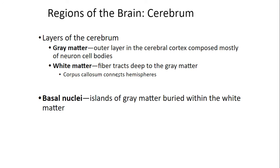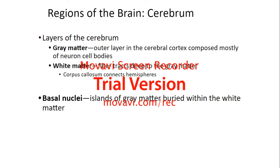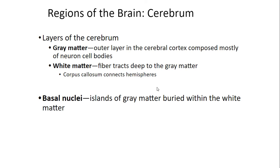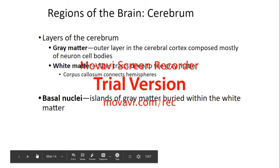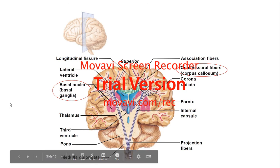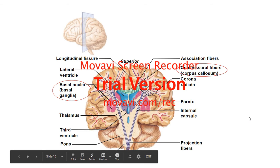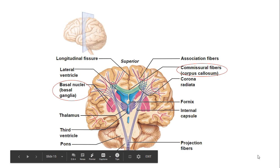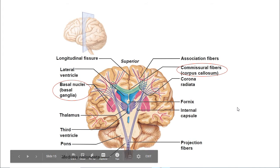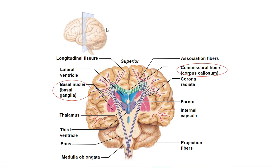You will also hear the term basal nuclei a lot. Basal nuclei are islands of gray matter buried within the white matter. This is showing you a transverse cut of the brain, and remember there's a lot of things going on in this picture, but look for what's circled in red.